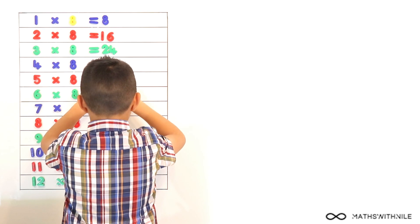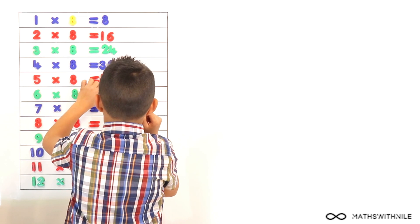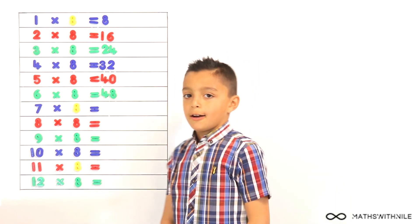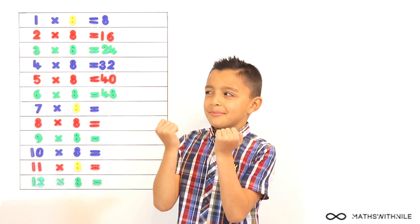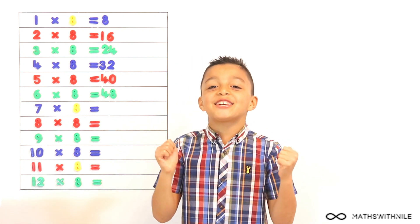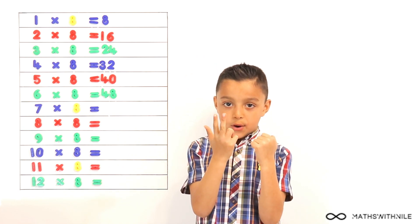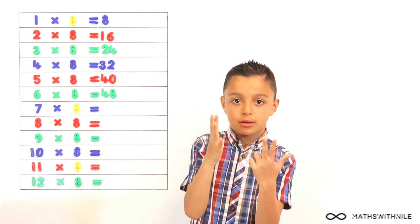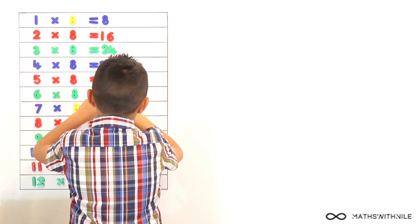The 8 times table is easier than I thought it would be. It's not that tricky, is it? No. What about 7 times 8? What are you going to do to that 48? I'll add 8 on. To 48, okay. 48, 49, 50, 51, 52, 53, 54, 55, 56. I thought you were going to run out of breath there. I almost did.